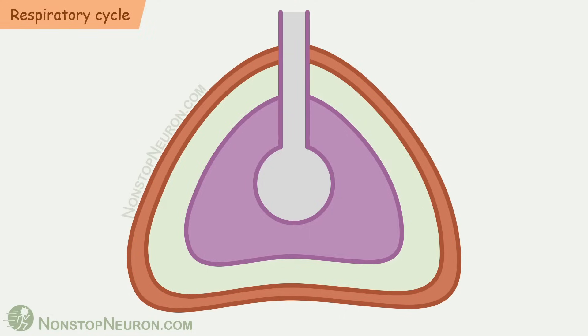Now let's see how both the pressures change during a respiratory cycle. This is the state just before inspiration. At this point, pleural pressure is about -5 cm of water. And alveolar pressure is 0 cm of water. Atmospheric pressure is always 0.